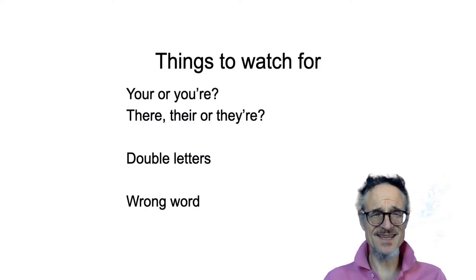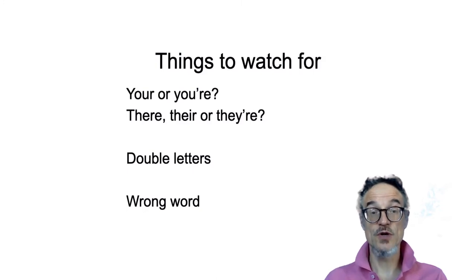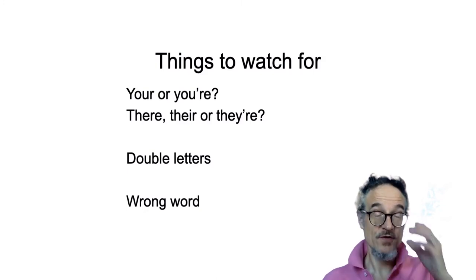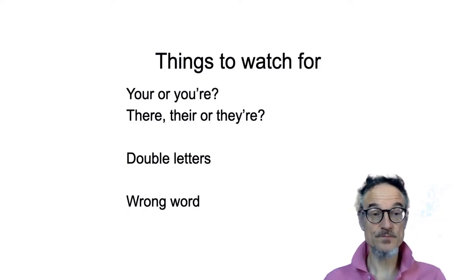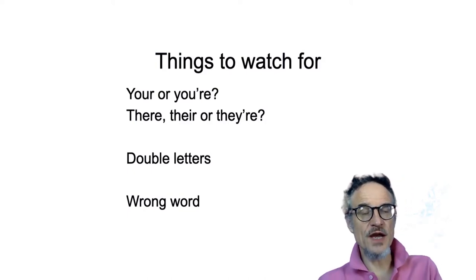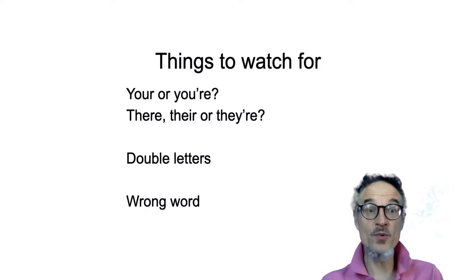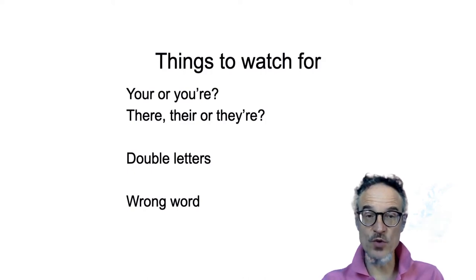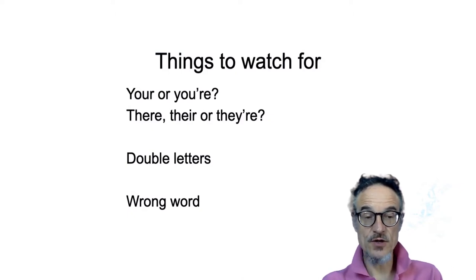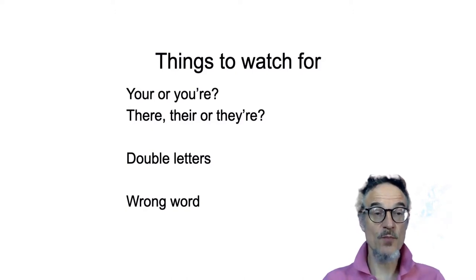Double letters — English has double letters. Sometimes there are rules, and sometimes there's just a double letter for no obvious reason. Watch out for double letters. If you're not sure, check. And sometimes if you use a word processor, if you're writing on a computer, the computer will probably check your spelling and may check your grammar. However, sometimes the computer may think the spelling is correct, but in fact it's the wrong word. So watch out for that.